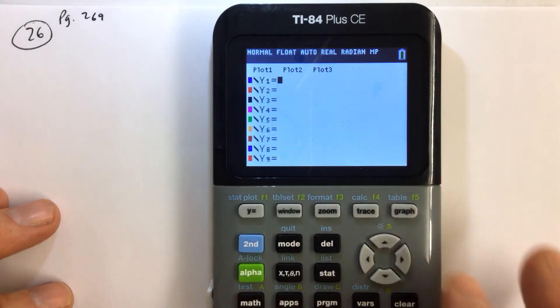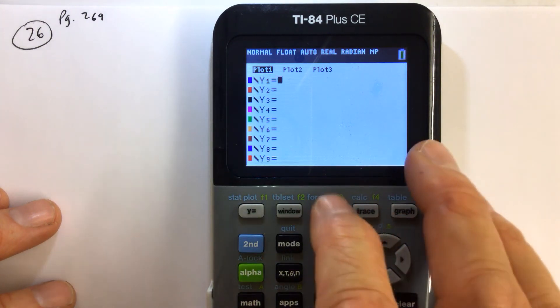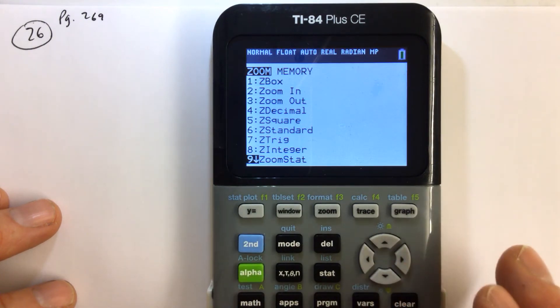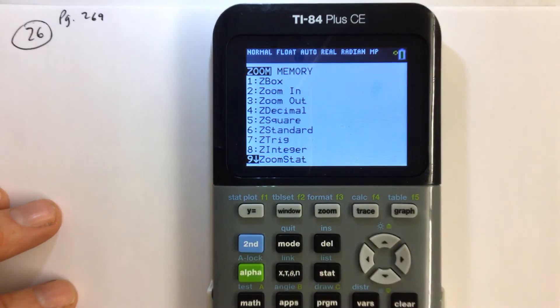So go to your y equals and select plot 1, up arrow. Plot 1 is selected, hit enter to select it. And now moving the cursor off of that, we can see that plot 1 is selected. And if we want to see the scatter plot based on the data, we push zoom, then we can scroll down to hit zoom stat or we can just do zoom 9, enter.